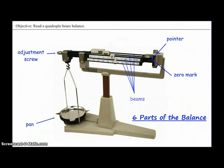We have four beams on the quadruple beam balance, and each of the beams has its own riders. The riders are adjusted in order to find the mass of the object.